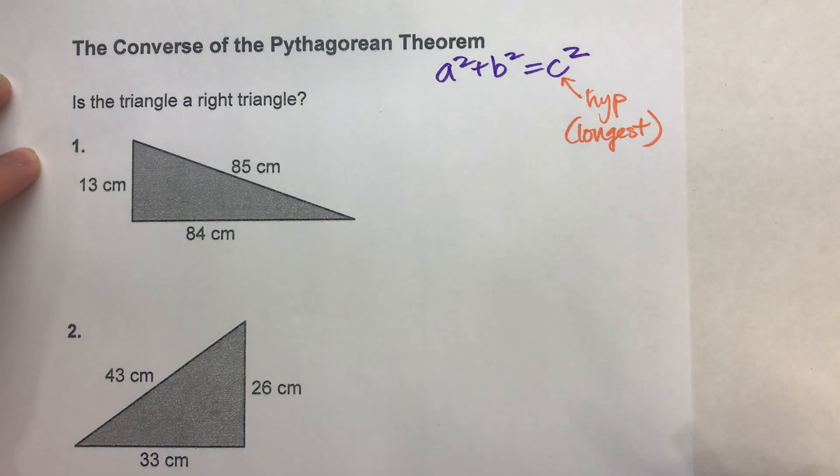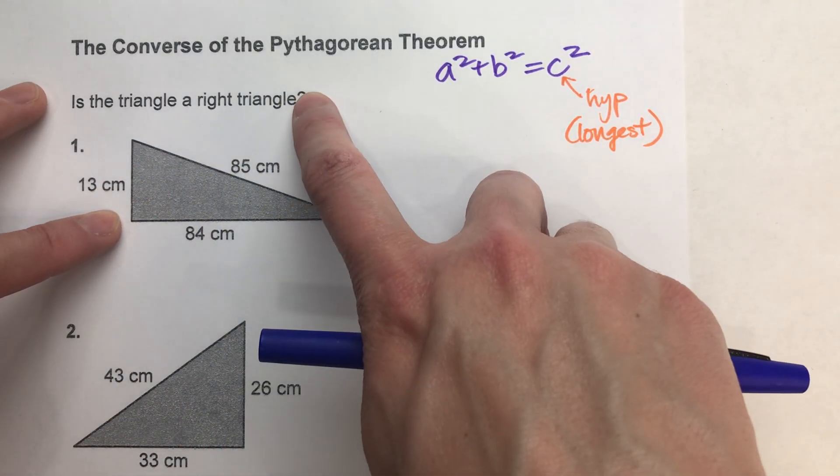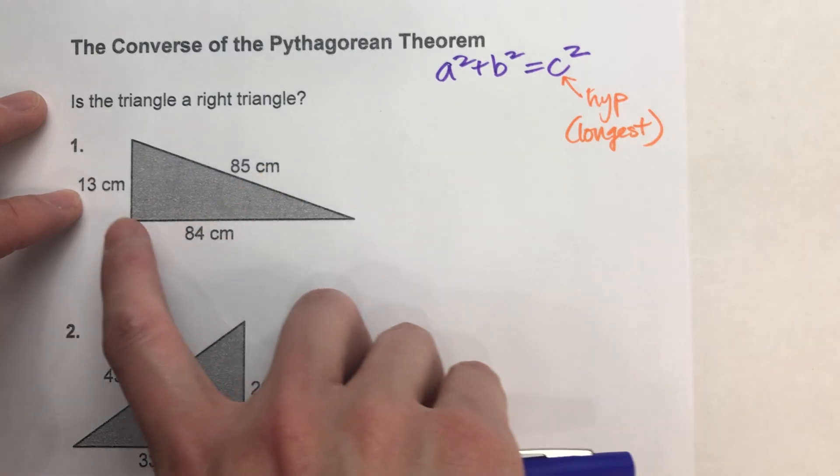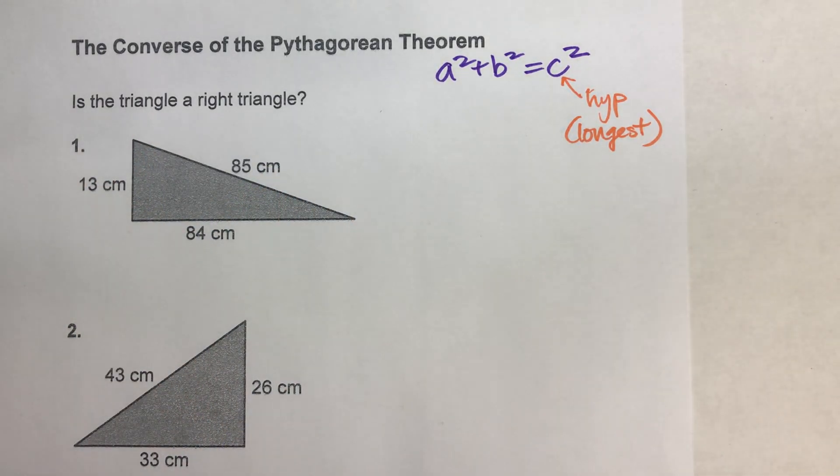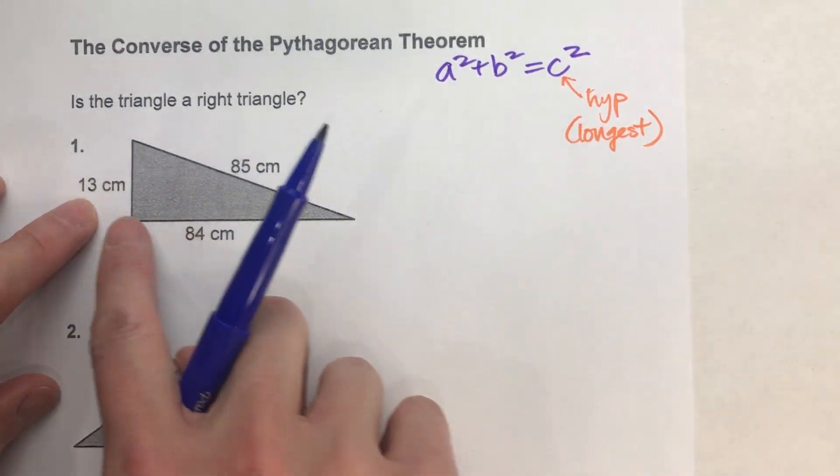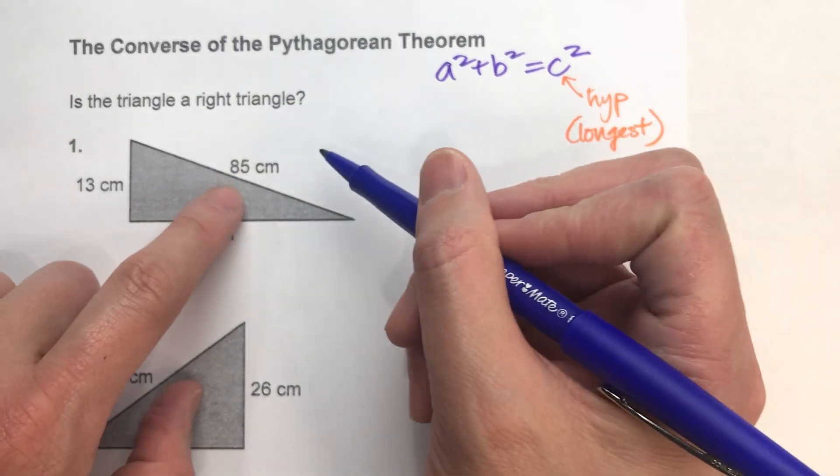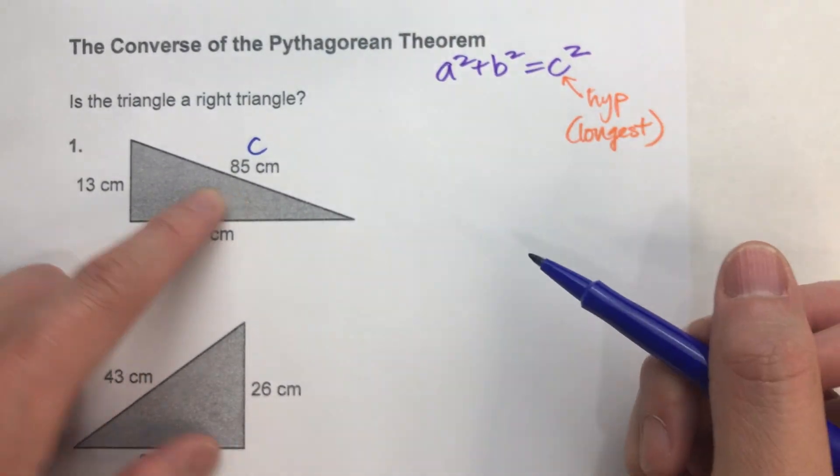Let's do some examples here. Here's our first example. We don't know if this triangle is a right triangle. The question is, is it? The side lengths are 13, 84, and 85 centimeters. First things first, we find the longest side. The longest side of these is 85. So if this is a right triangle, this would be my hypotenuse, and this would be c.